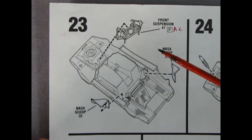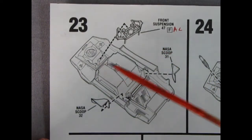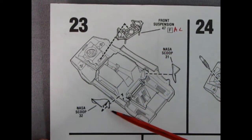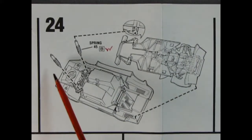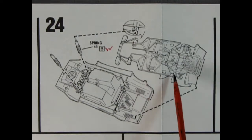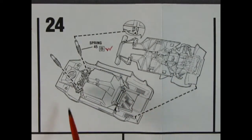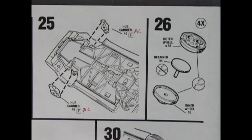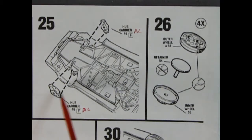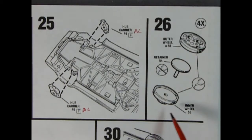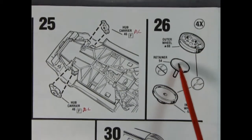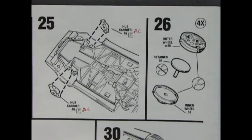Panel 23 shows the front suspension going into the body up front and then we've got these NASA scoops as well. Panel 24 shows the front spring shock absorbers being glued into place and then the entire chassis pan gets dropped onto the body. Panel 25 shows our hub carriers being glued into place and then we've got that three-piece wheel with the outer wheel, the retainer, and the inner wheel. Make sure you don't get any glue on that retainer or you're going to lock that wheel in place.